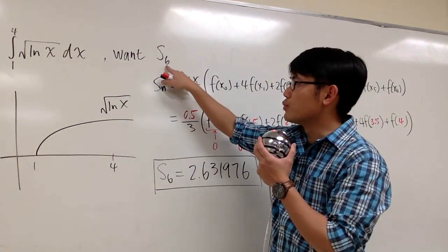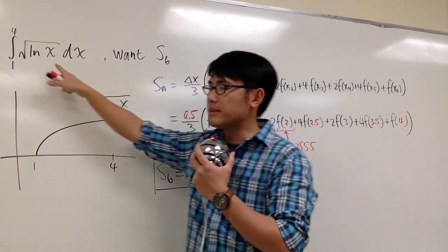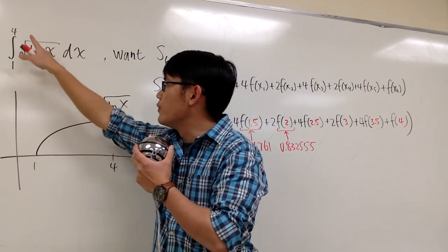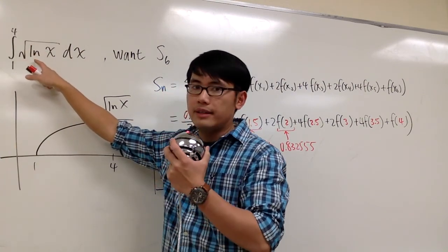We are going to see how we can use Simpson's rule with n equals 6 to approximate this integral, the integral from 1 to 4 of square root of ln x dx.